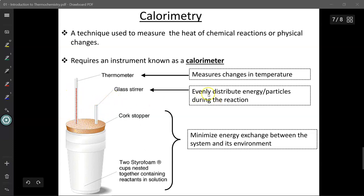You've got a glass stirring rod in order to evenly distribute the energy in the particles during the reaction itself. Then we've got a cork stopper or a styrofoam cup in order to minimize energy exchange, both loss or gain of energy between the system and its environment.